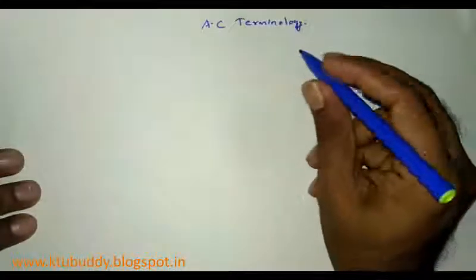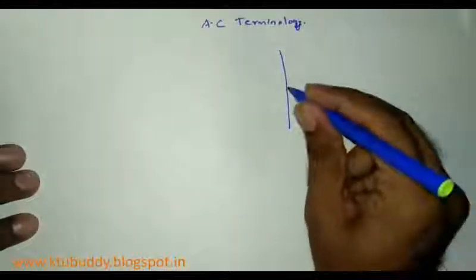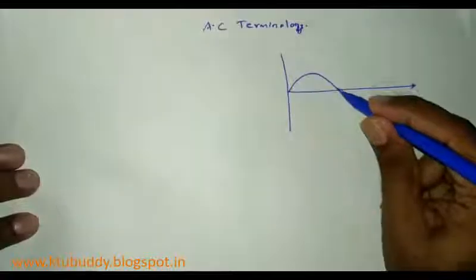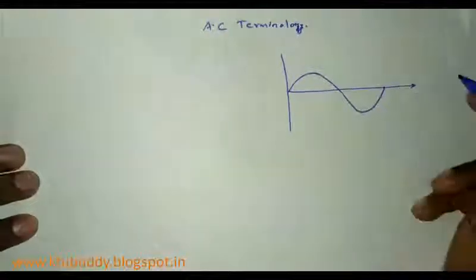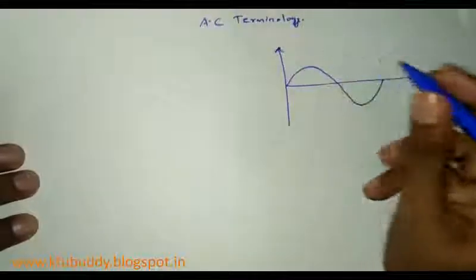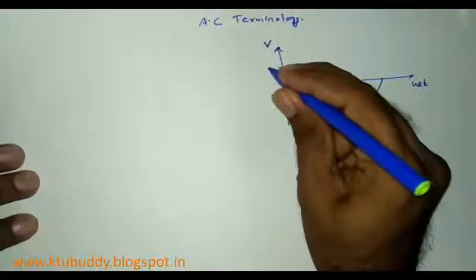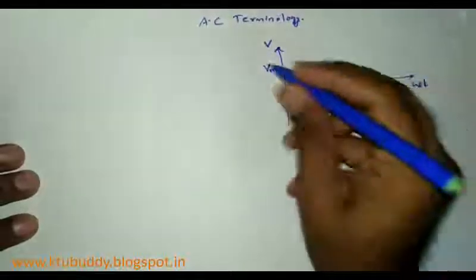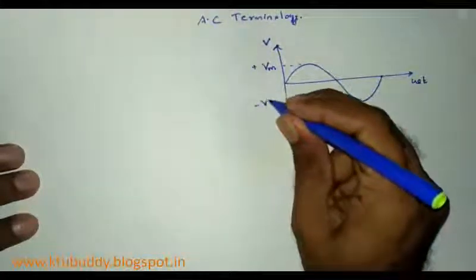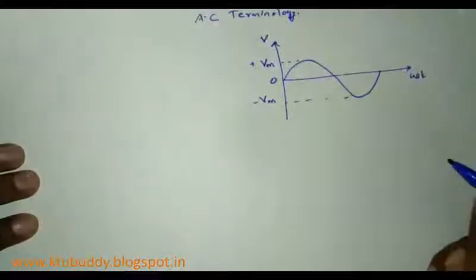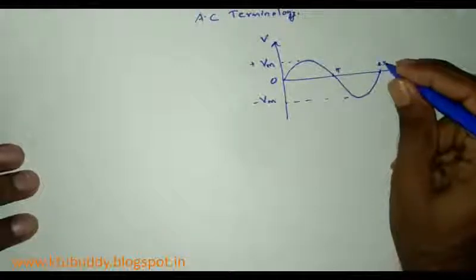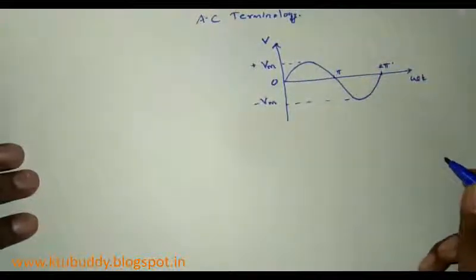First, let's consider a sinusoidal alternating current as shown. Consider omega t on the x-axis and voltage V on the y-axis. Let Vm be the maximum value of the sinusoidal alternating current — this is plus Vm and this is minus Vm — and let it be zero at the origin.